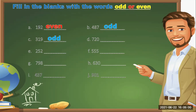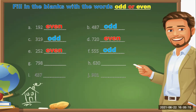319 is also an odd number. 720 is an even number. 252 is an even number because the digit 2 is an even number. 555 is an odd number because 5 is an odd number. 798 is also an even number because 8 is an even number. 630 is also an even number because 0 belongs to the even numbers.